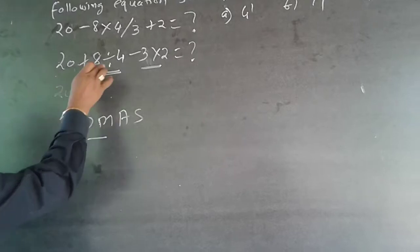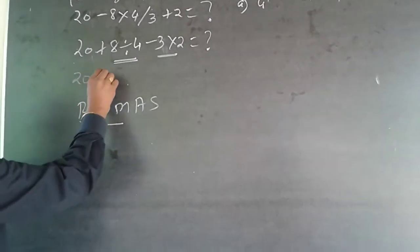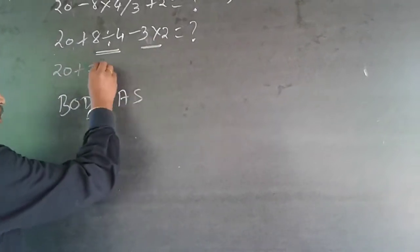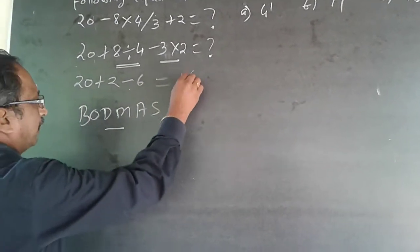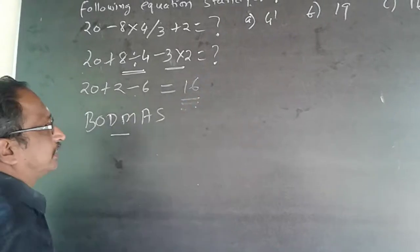So, it will be 20 plus 8 divided by 4 will be 2 minus 3 into 2 will be minus 6. So, it will be 20 plus 2 minus 6 will be equal to 16. The answer is 16.